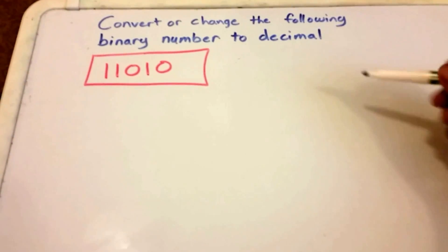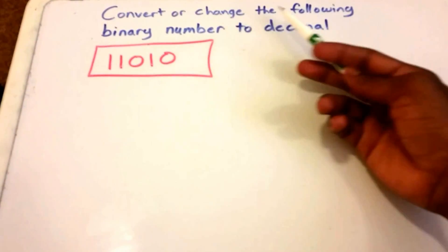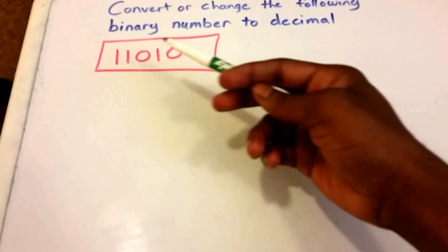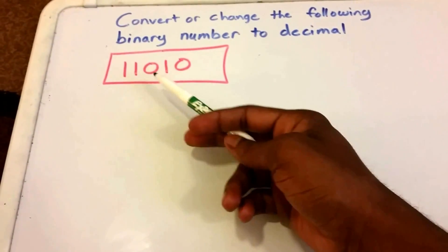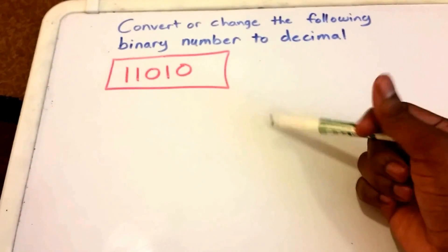Hey guys and welcome to this video. In this video we want to convert or change the following binary number to decimal. So here I have the binary number in red, it's 11010, and we want to convert it to a decimal number such as 10, 24, 36, 72, something like that.